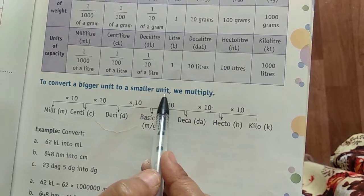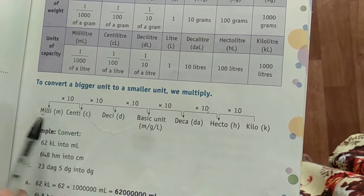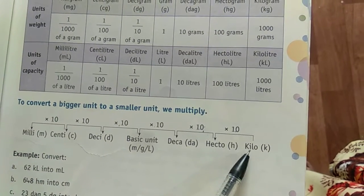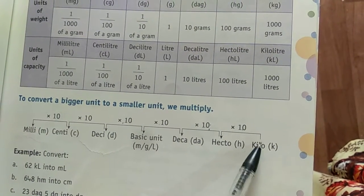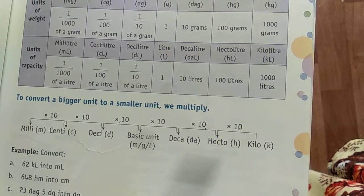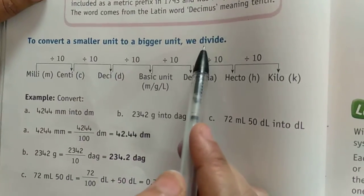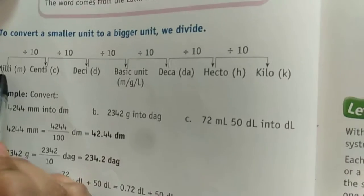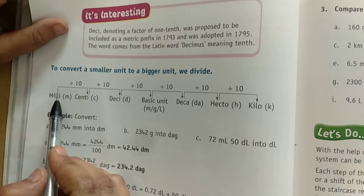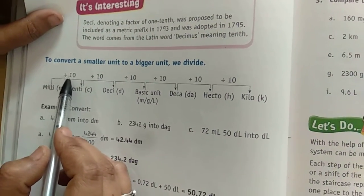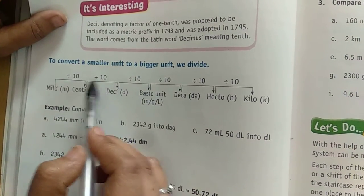Using the multiplier chart, moving from right to left — from kiloliter to milliliter — we multiply by 10 at each step. To convert a smaller unit to a bigger unit, we divide. Milliliter is a smaller unit and kiloliter is a bigger unit, so converting from smaller to bigger, we divide by 10 at each step. You can see they are dividing by 10.